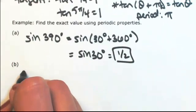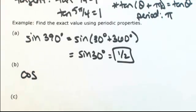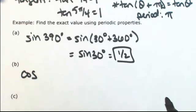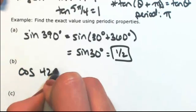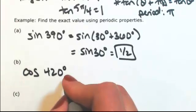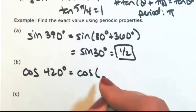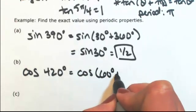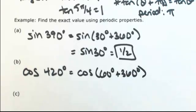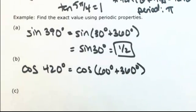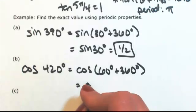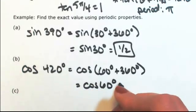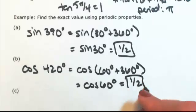Cosine — same idea. Let's say we have the cosine of 420 degrees. This could be rewritten as the cosine of 60 degrees plus 360 degrees. Since the period of cosine is 360, we're just going to be back to where we started at cosine of 60 degrees, which is also 1 half.